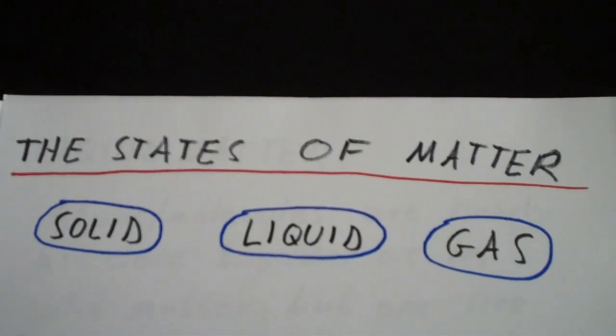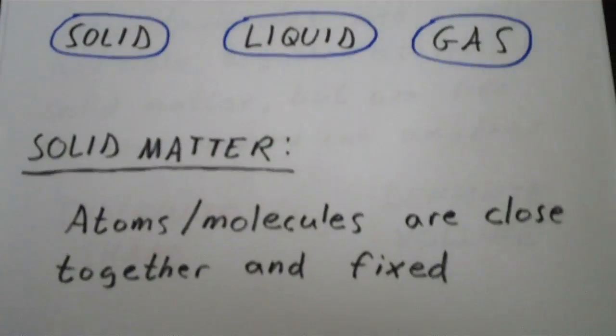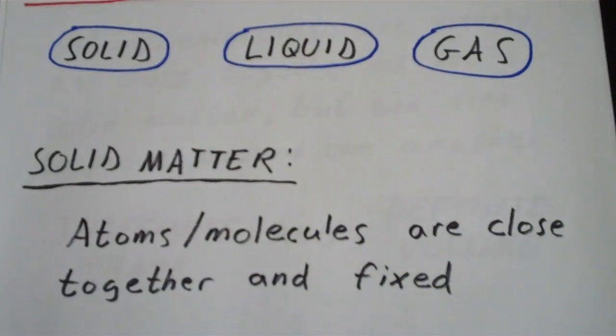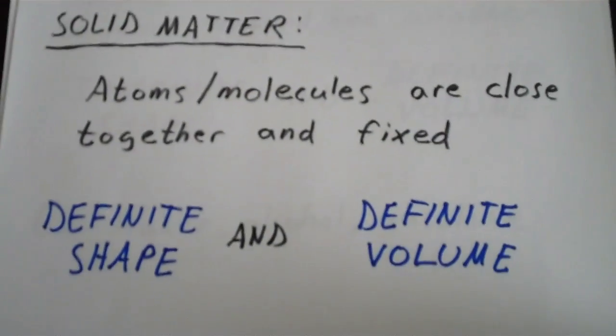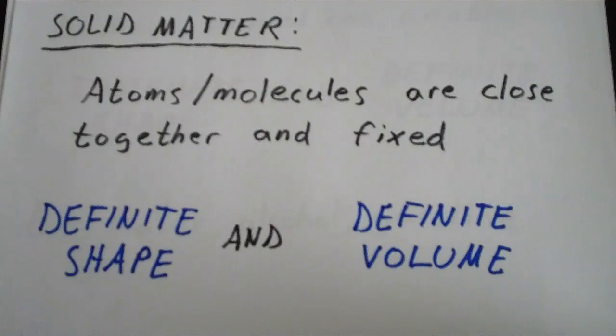Let's start with solids. In solid matter, atoms or molecules are close together and fixed. The atoms or molecules that compose a solid do vibrate. There are small vibrations within the atoms or molecules, but they can't really move around or past one another. This gives rise to a definite shape and a definite volume.